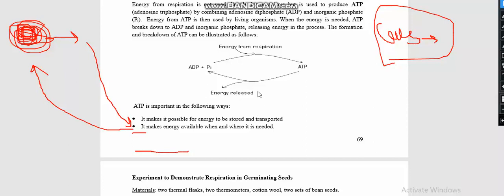When the body needs energy, the ATP is broken down, and it releases energy. This energy is now used by cells. What forms ATP is adenosine plus inorganic phosphate to form ATP. When the body needs energy, this ATP is broken down, and in the process it releases energy.